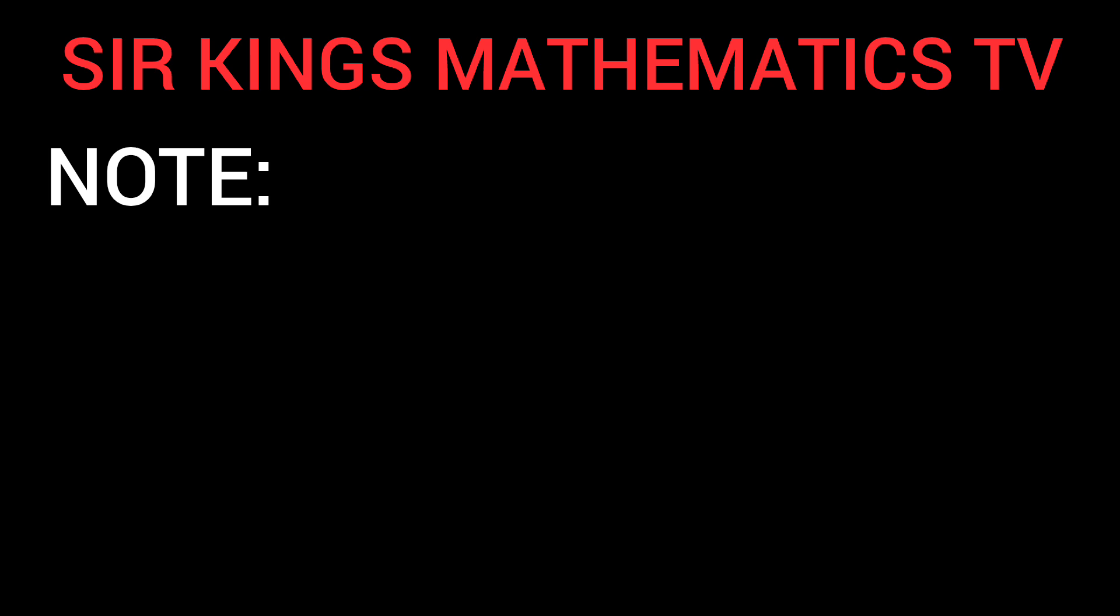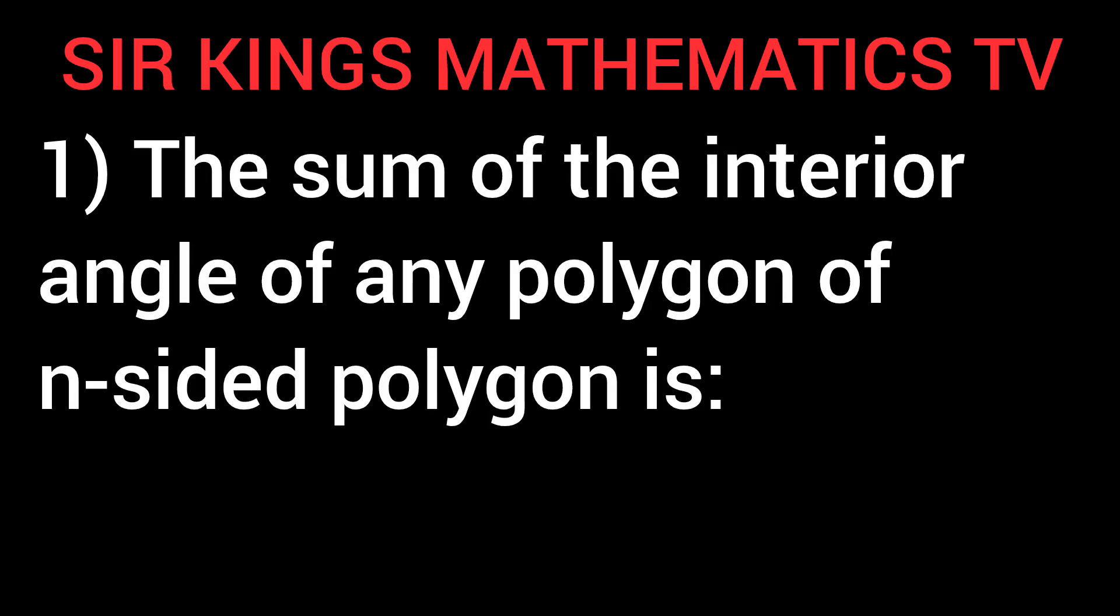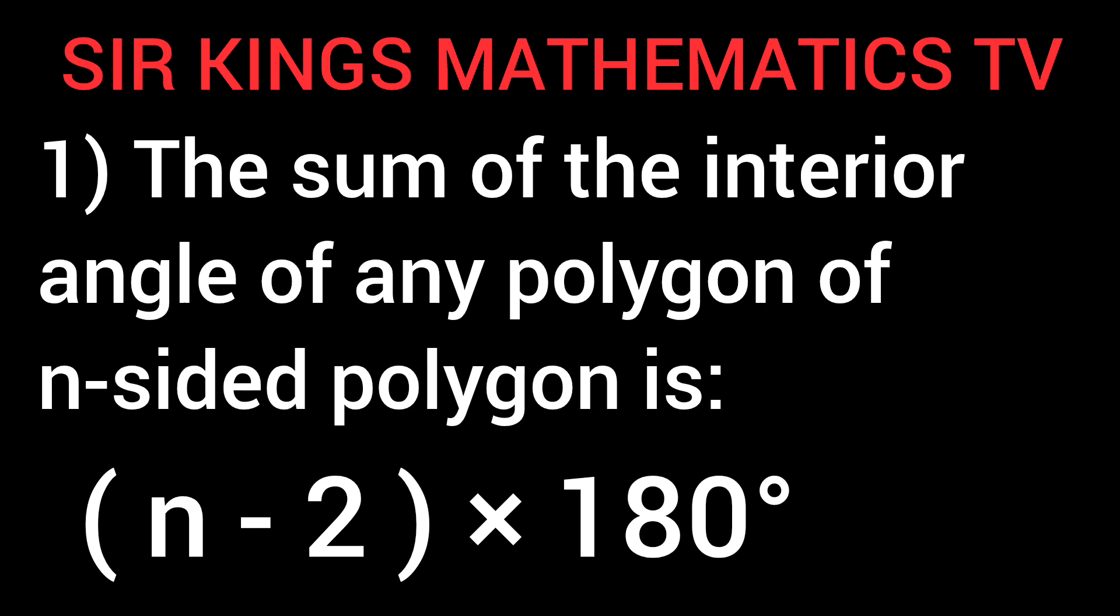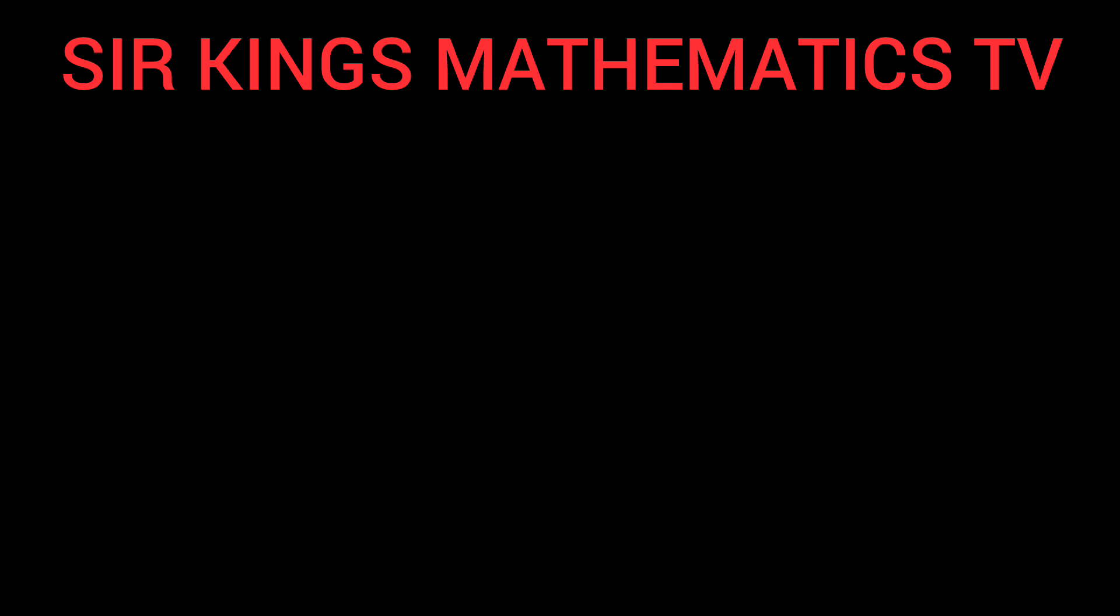Note 1: The sum of the interior angles of any n-sided polygon is (n - 2) × 180 degrees.